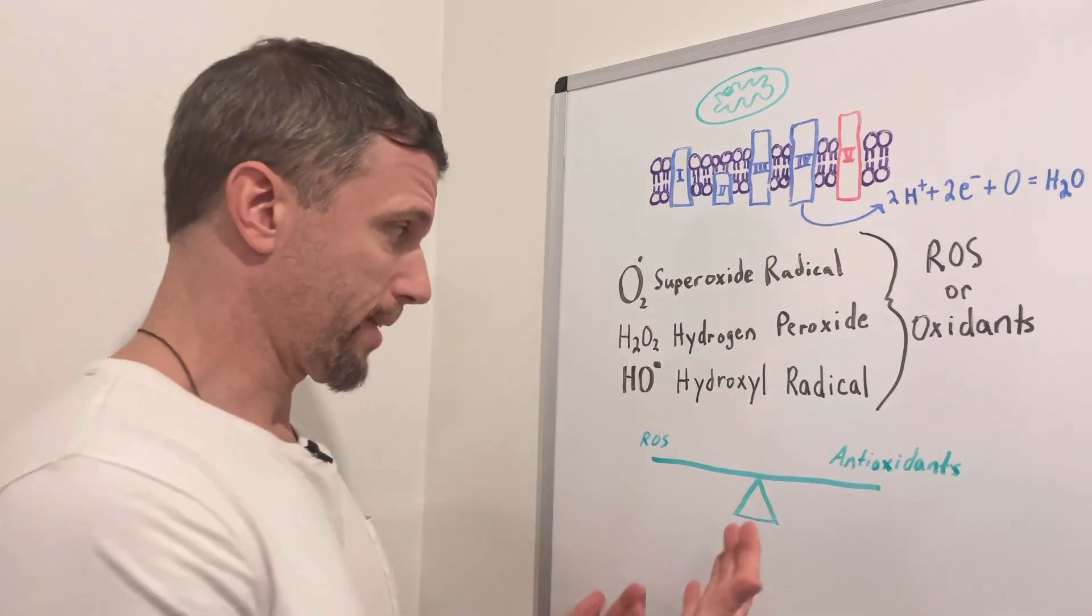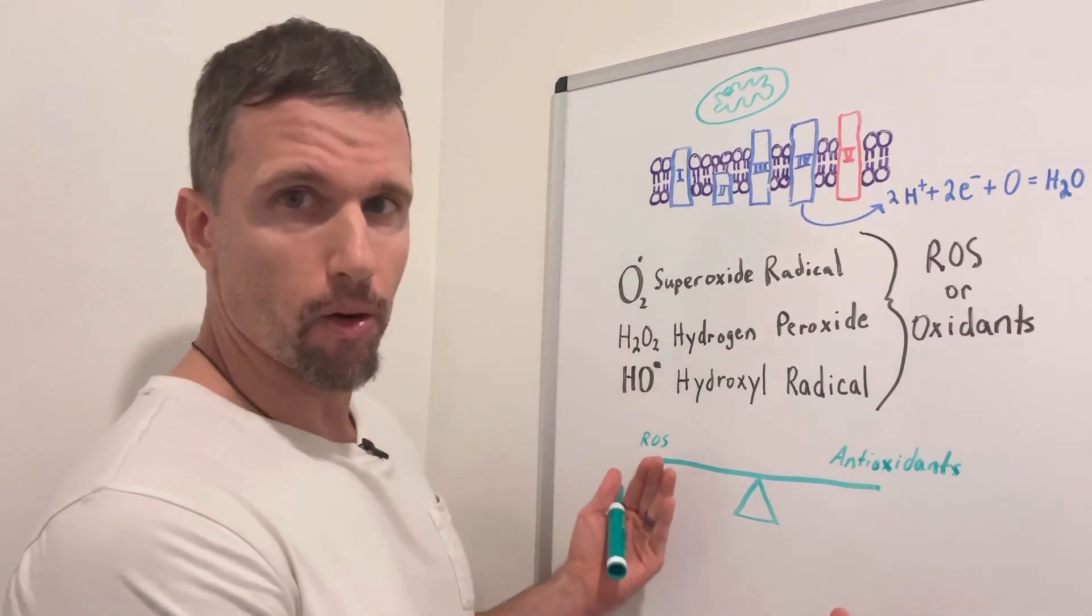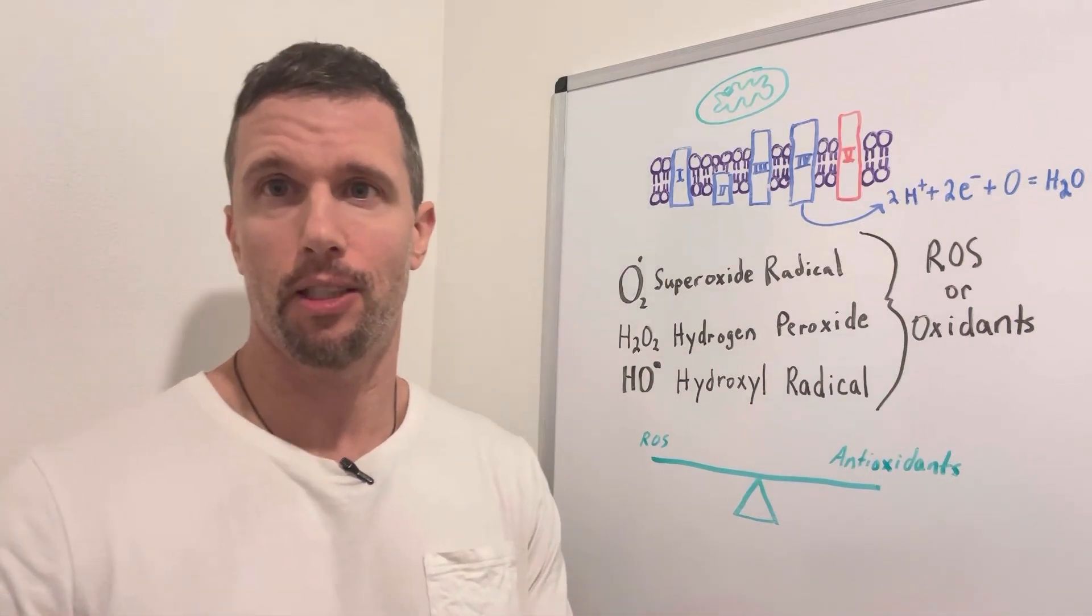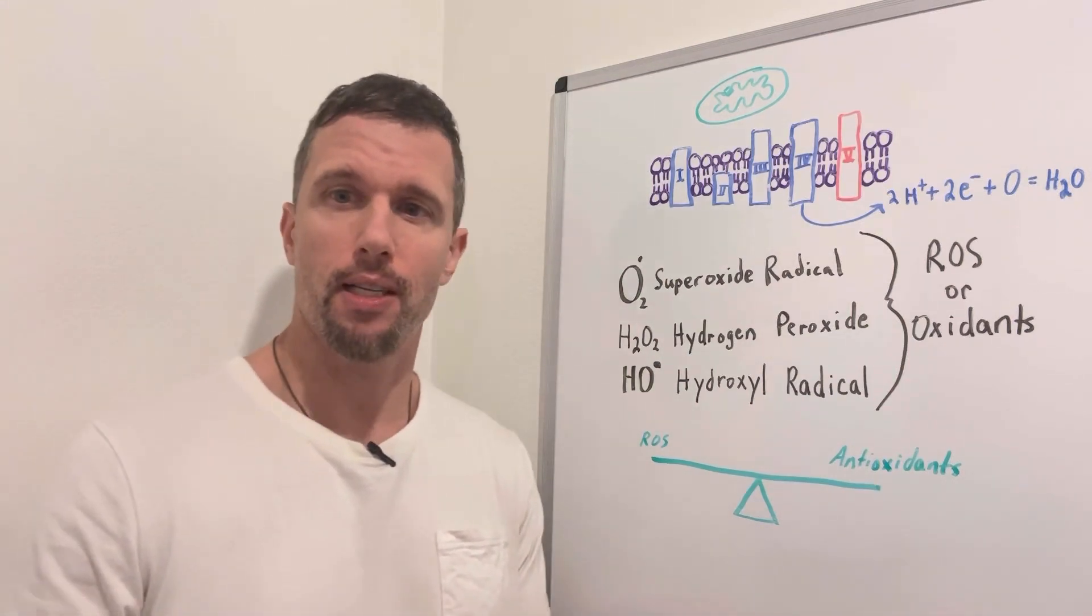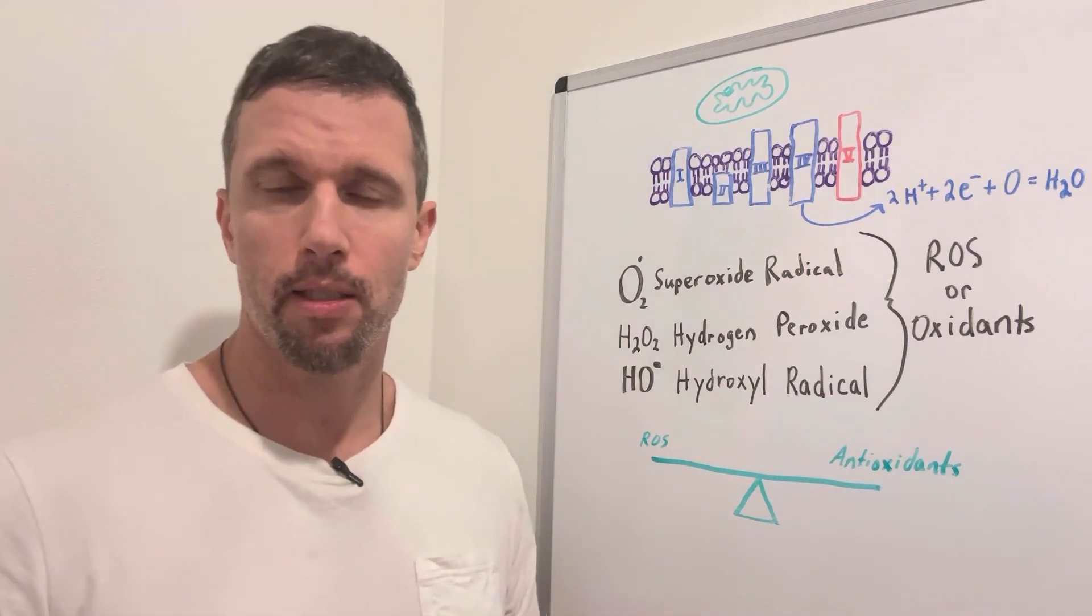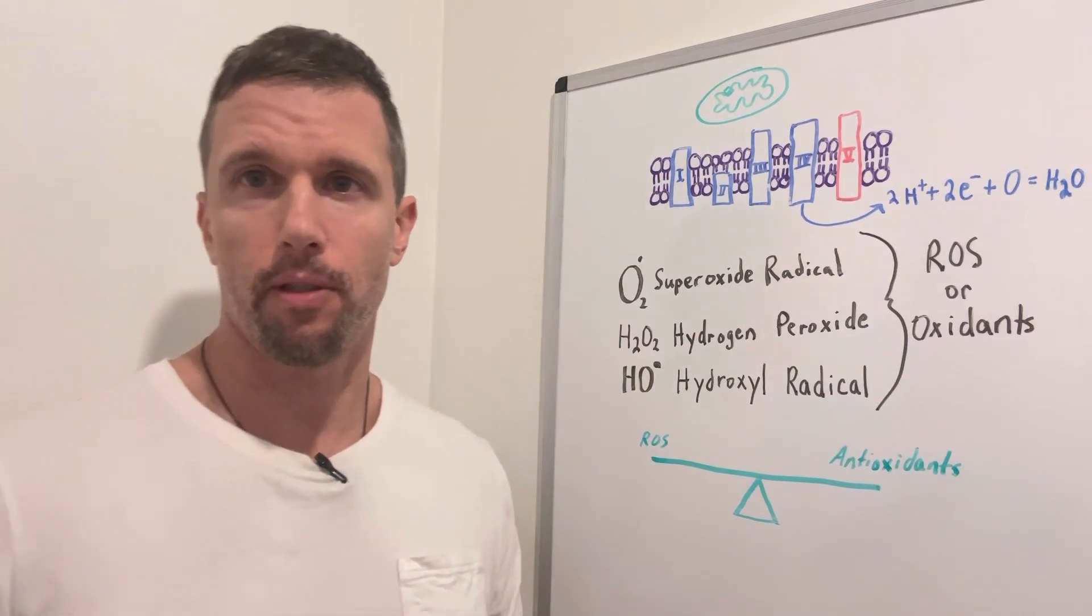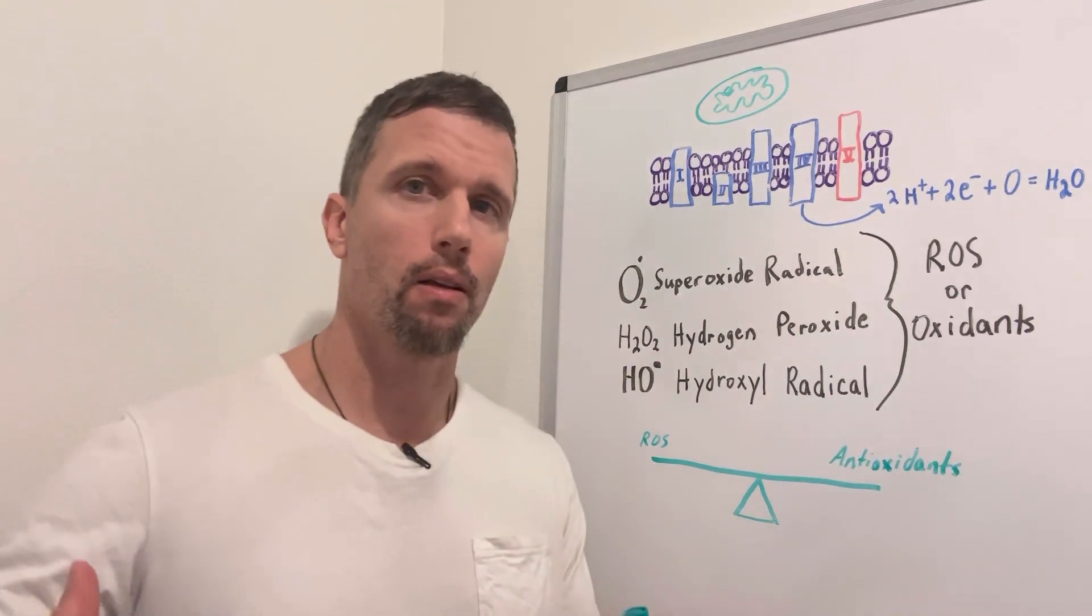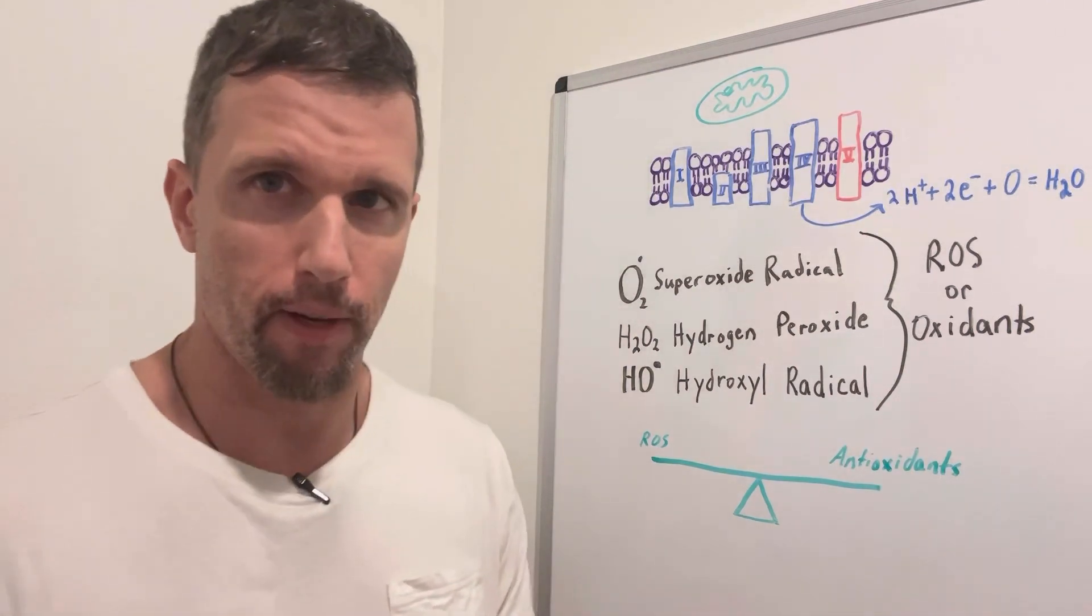So when these reactive oxygen species kind of tip the scale, what happens is it leads to aging. It leads to degenerative diseases like heart disease, stroke, Alzheimer's disease. It can cause all types of different things to happen. So let's first talk about how our body makes reactive oxygen species.